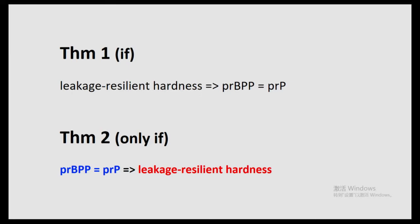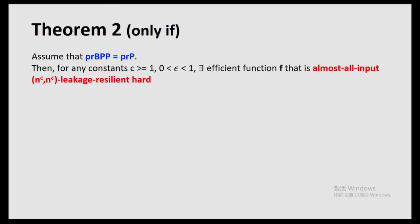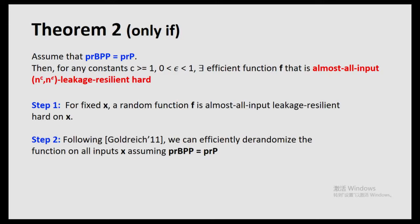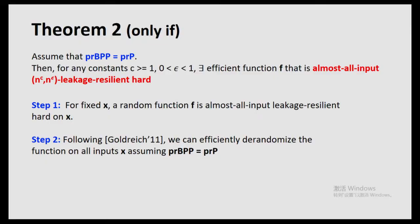Let me jump into the other direction of the proof. Now we want to show: if BPP equals P, then we can actually obtain an almost-all-inputs leakage-resilient hard function. Our proof proceeds in two steps. First, we notice that for any fixed string, a random choice of F(x) will be almost-all-inputs leakage-resilient hard on that specific x — this follows from a Kolmogorov-style counting argument. Step two, following Goldreich, we show that we can efficiently derandomize this random choice of F(x) on all inputs x, assuming BPP equals P.